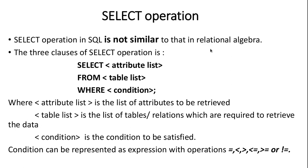In relational algebra, the SELECT operation is represented by Sigma and is used to retrieve only rows from one relation. We cannot combine more than one relation in relational algebra using SELECT. But in SQL, you can combine tables and retrieve data from the combined table.